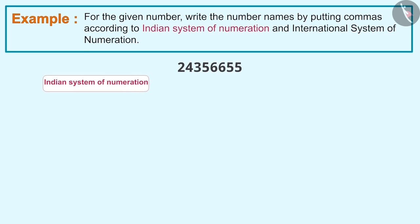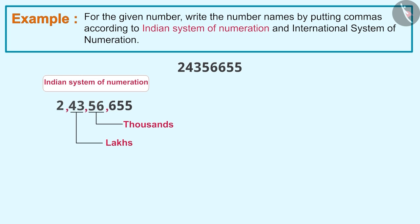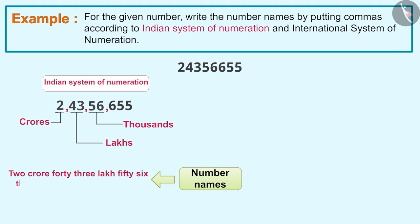According to the Indian System of Numeration, commas are used after three digits from right to mark thousands, then after two digits to mark lakhs, and then after two digits to mark crores. So according to this system, the number name will be written as 2 crore 43 lakh 56,655.